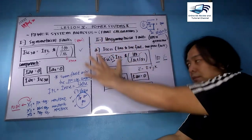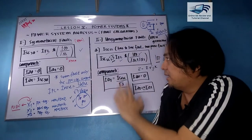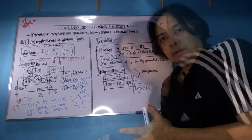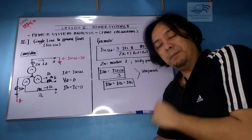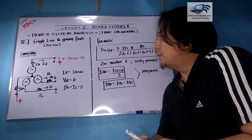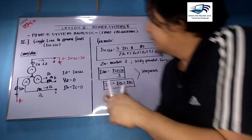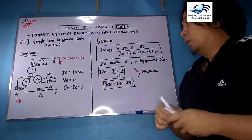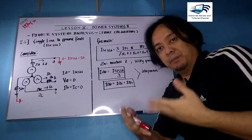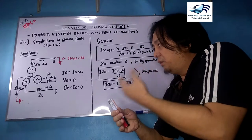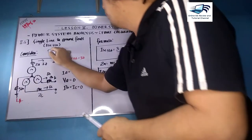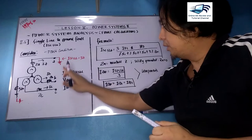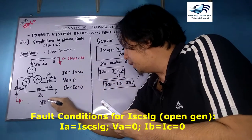We will now discuss the single line-to-ground fault, which is type 2B. Before we go to the formula, I will give you the fault condition. All of the formulas derived here are for an open generator. These formulas can also be used in a loaded power system — we will explain that in detail in a separate video.